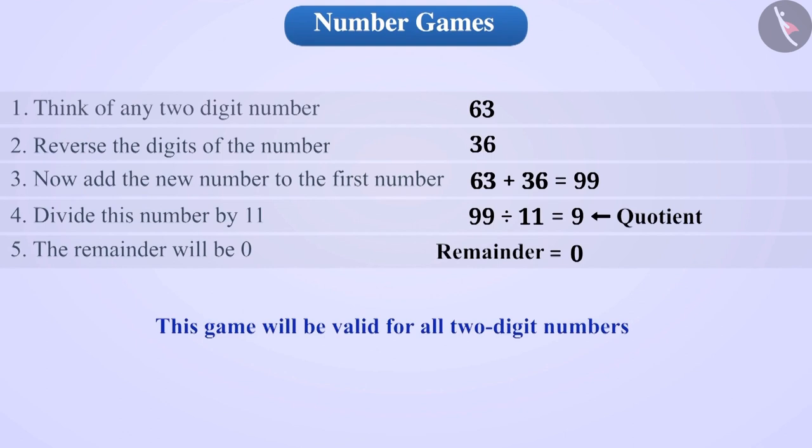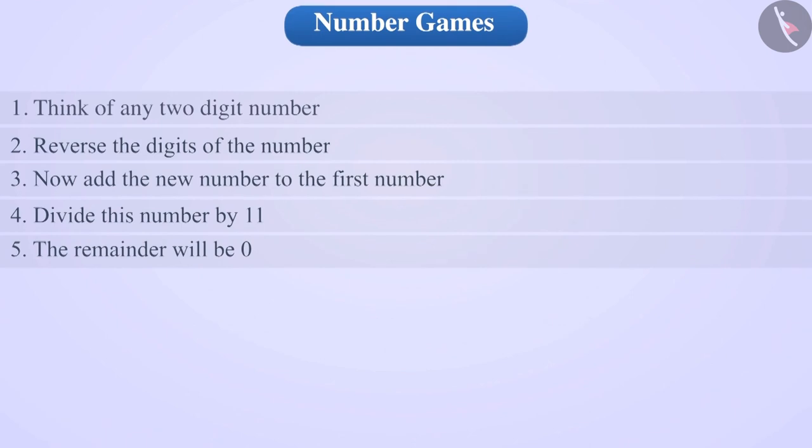Let us now understand why this happened. Suppose AB is a number in which A is the digit in the tens place and B is the digit in the units place. We learned that we can write AB in the general form 10A plus B.